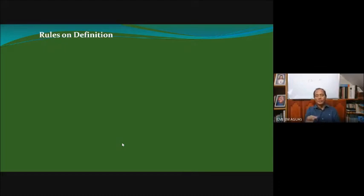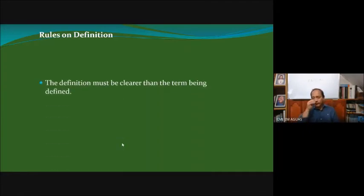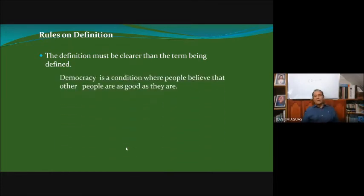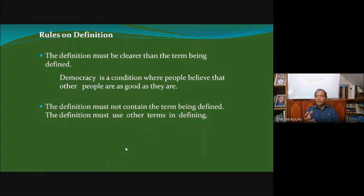Now let's go to the rules of definition. The first rule is that your definition must be clear, because that is the very purpose of definition — to explain what the object is. If you give a definition that simply confuses people, you defeat the purpose. For example: 'Democracy is a condition where people believe that other people are as good as they are' — that is not a good definition because it's unclear what is meant by people being as good as they are.